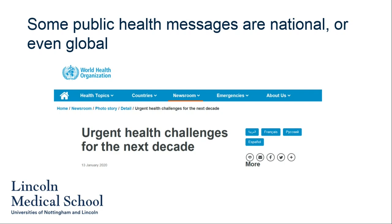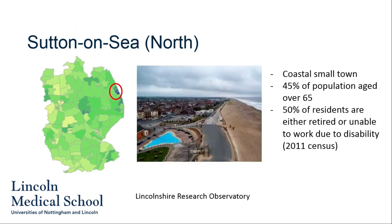But sometimes we're not thinking about things on a national or international scale — sometimes we want to think about public health on a more local basis, understanding the needs of a particular town or even a smaller community. This is Sutton-on-Sea, one of our coastal communities in Lincolnshire. You can see I've put a little red circle around where it is on the map. One thing about Sutton-on-Sea is it has a much older population — 45% of people in this area are aged over 65, and about half of all residents are either retired or don't work due to disability or long-term health conditions.